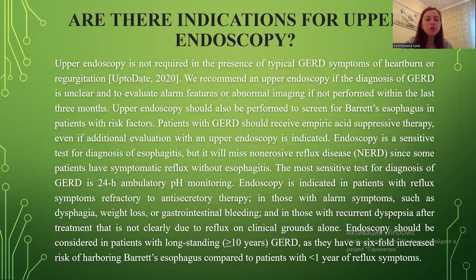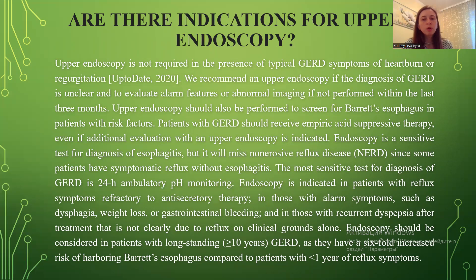What are the indications for upper endoscopy? Upper endoscopy is not required in the presence of typical GERD symptoms of heartburn or regurgitation. We recommend upper endoscopy in the diagnosis of GERD in anorexia and to evaluate a long stricture or abnormal imaging if not performed within the last three months. Upper endoscopy should also be performed to screen for Barrett's esophagus in patients with risk factors. Endoscopy is a sensitive test for diagnosis of esophagitis, but it will miss non-erosive reflux disease.